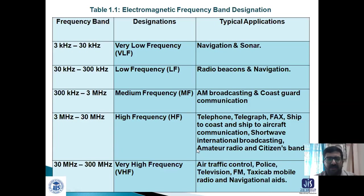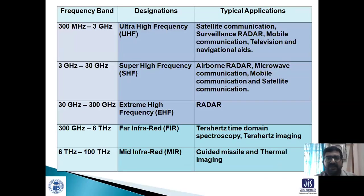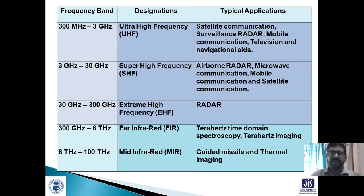We are already in the RF range from 30 MHz upward. 300 MHz to 3 GHz is ultra high frequency, used for satellite communication, surveillance radar, mobile communication, and television navigation. Mobile communication has grown hugely — almost everyone has a mobile phone, and the total number of mobile phones in the world is more than one billion. Studying RF and Microwave Engineering will greatly help in understanding mobile communication, since all transmitter and receiver circuits fall under radio frequency communication.